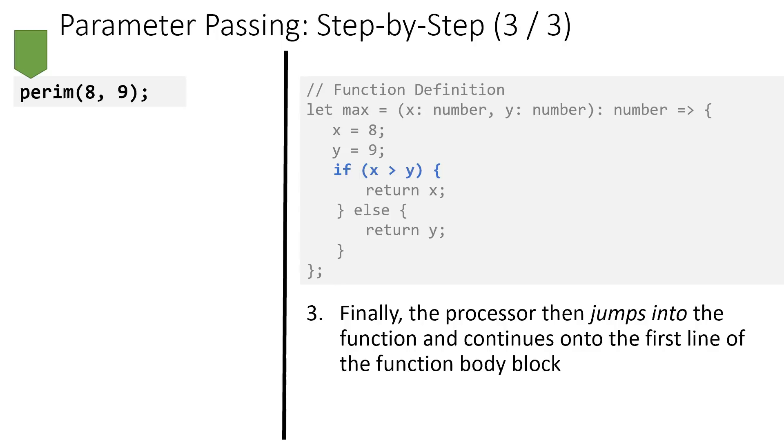These are the fundamentals of arguments and parameters, and so hopefully now you have a good sense of what happens when the processor reaches a function call and that function call contains some arguments. Well, it takes those arguments, assigns them to the function's parameters, and then continues into that function definition. And this is how we're able to provide inputs to a function's definition.